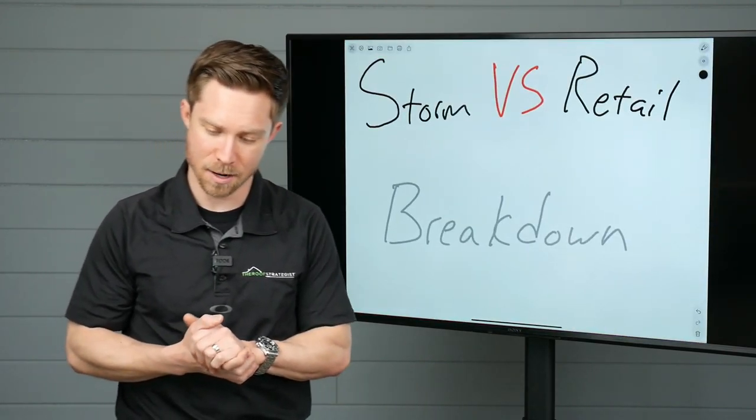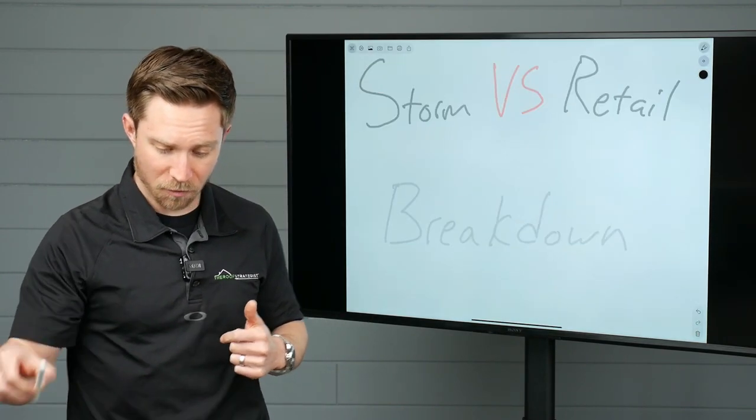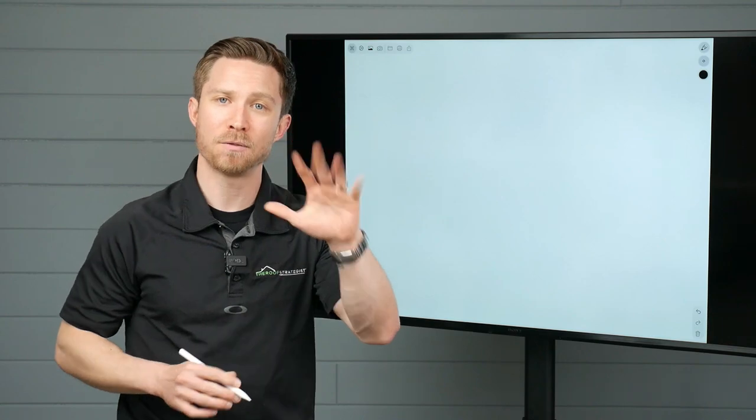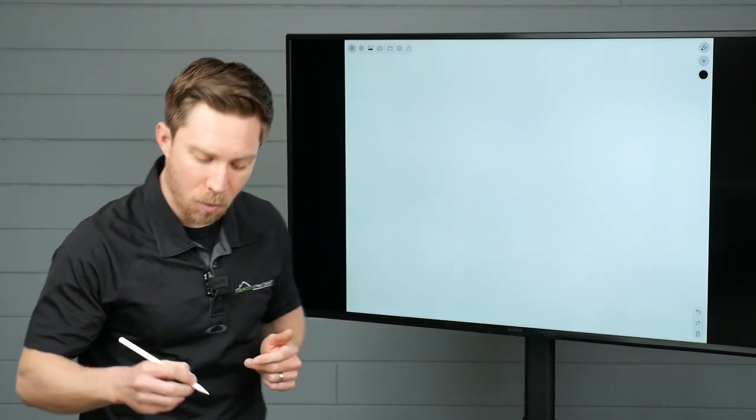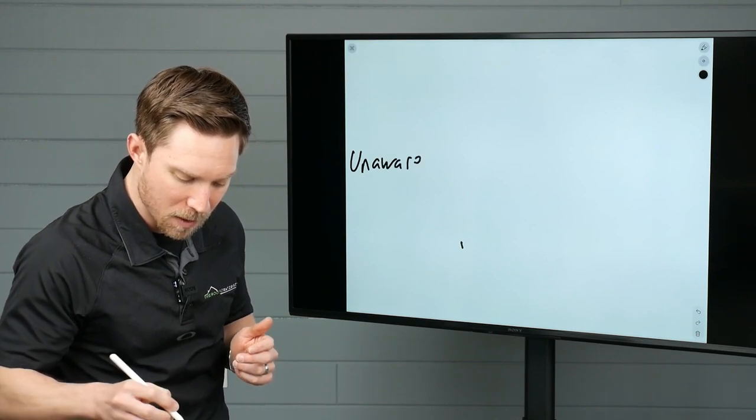So let's get into the meat and potatoes of today. Storm versus retail, the true breakdown. And again, full credit here goes to Eugene Schwartz with his five levels of awareness. I want to break down what these are. First, we have unaware.